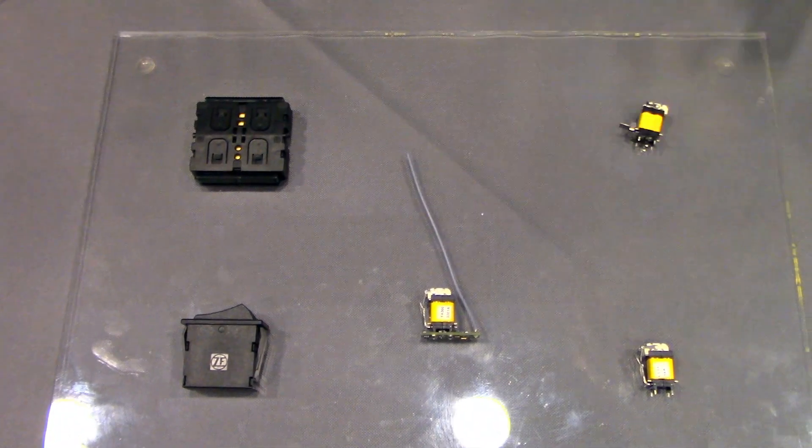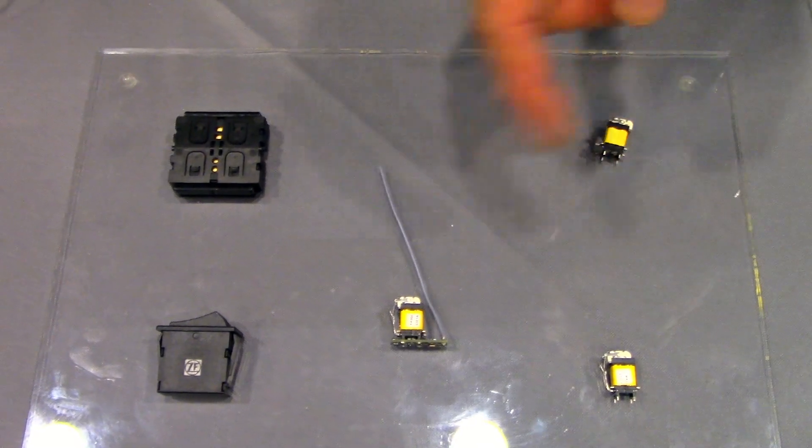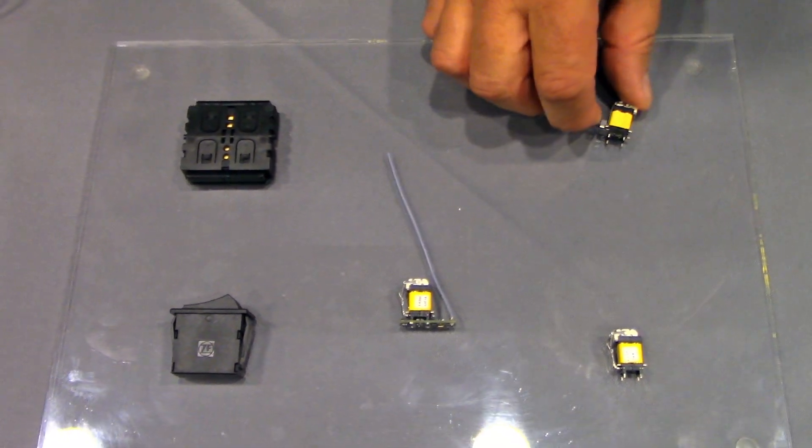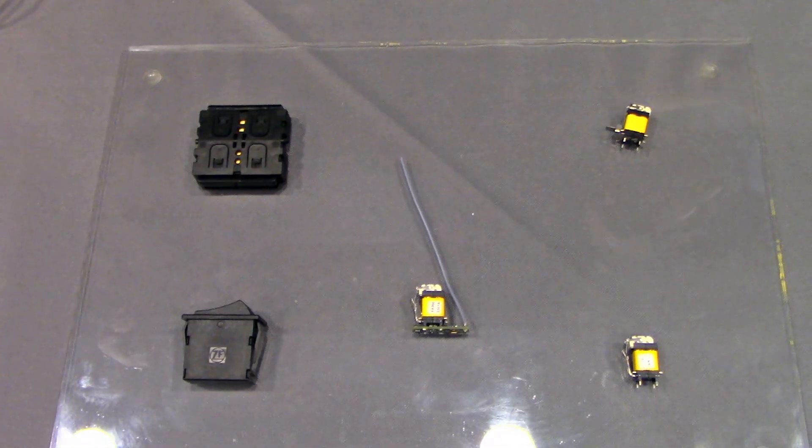The energy harvester comes in two forms. One is the monostable, which is a push button. And then we have a bistable switch that has a lever that you can actuate by moving it up and down.